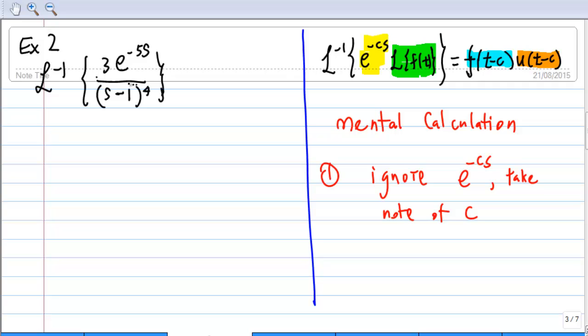Since the calculation is a little bit involved, I'm going to do mental calculation to avoid writing too much material. First, you must ignore e power negative cs and take note of c.